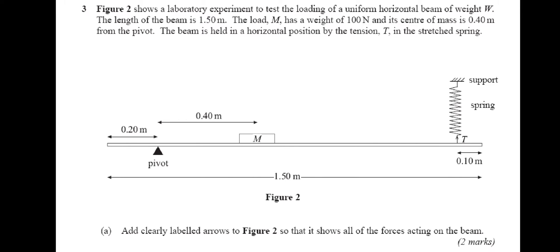Figure 2 shows a laboratory experiment to test the loading of a uniform horizontal beam of weight W. The length of the beam is 1.5 metres. The load M has a weight of 100 newtons and its centre of mass is 0.4 metres from the pivot. The beam is held horizontal by the tension T in a stretched spring. The first question asks to add clearly labelled arrows to figure 2 showing all the forces acting on the beam.